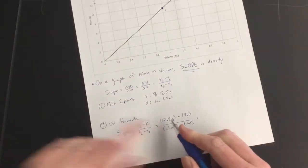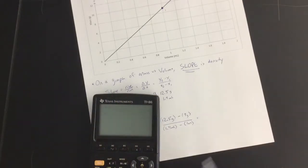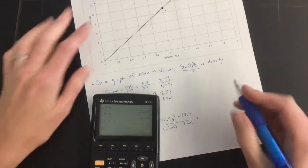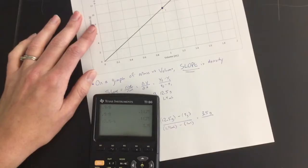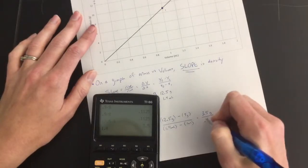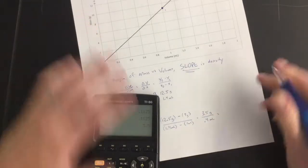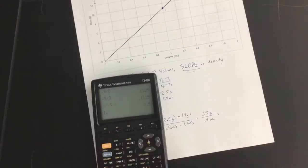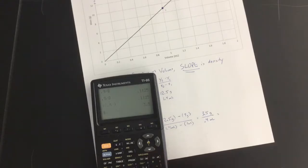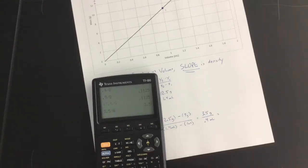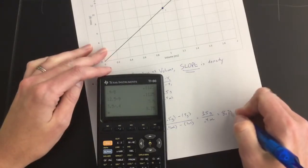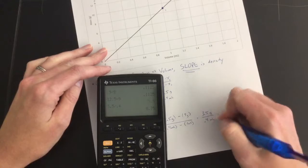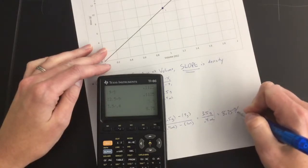Let's use my handy calculator here. 12.5 minus 9, I get 3.5 grams on top, and then 1.4, I can do that one in my head, is 0.4 milliliters on the bottom. So that's the math I'm going to plug into my calculator. 3.5 divided by 0.4, and I get 8.75, and then I just have to tack on my units, grams per milliliter.